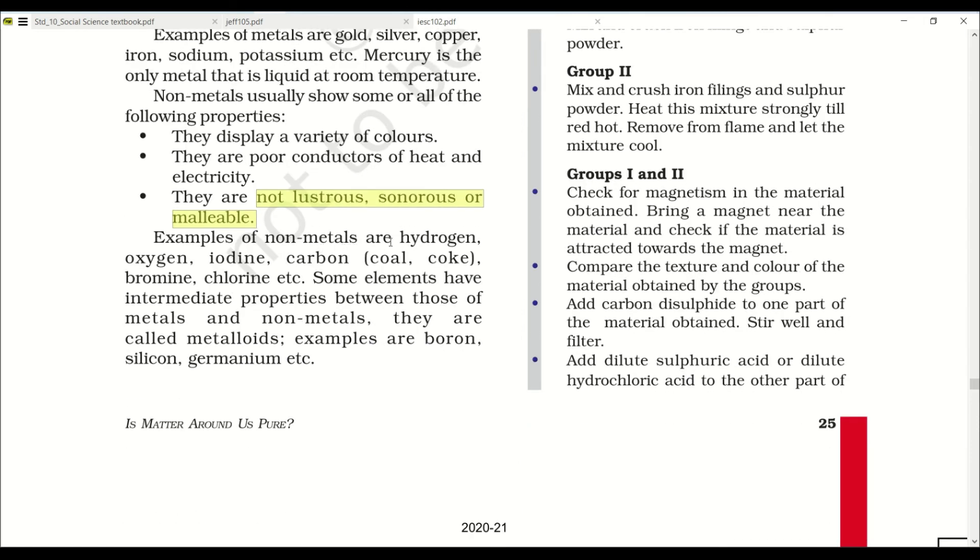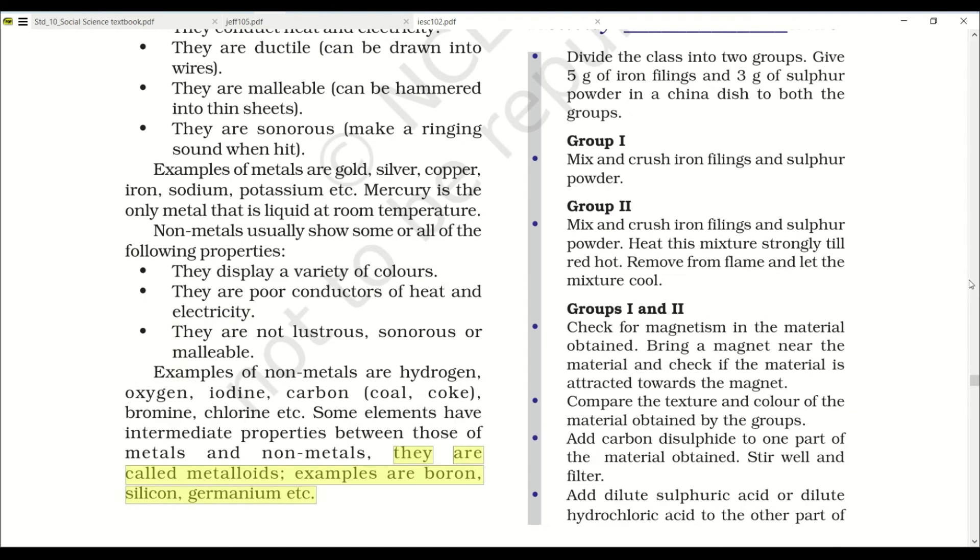Examples of non-metals are hydrogen, oxygen, iodine, carbon, bromine, chlorine, etc. Some elements have intermediate properties between those of metals and non-metals. They are metalloids. Examples: boron, silicon and germanium.